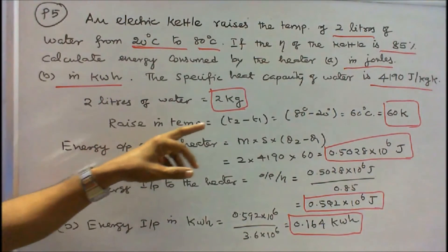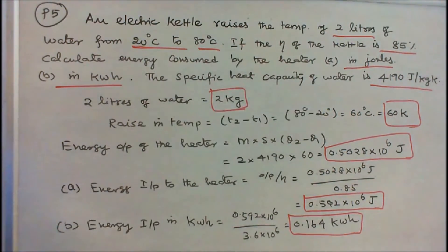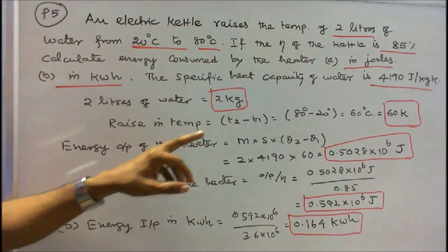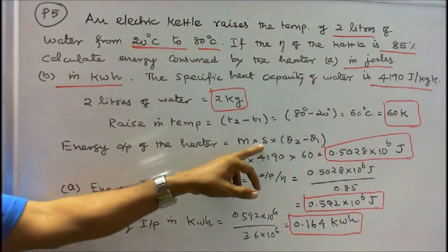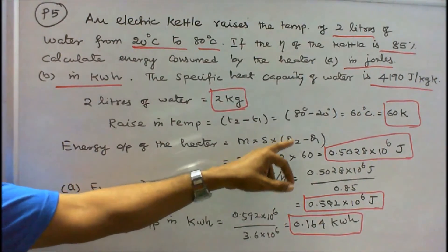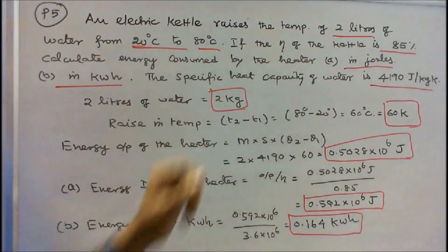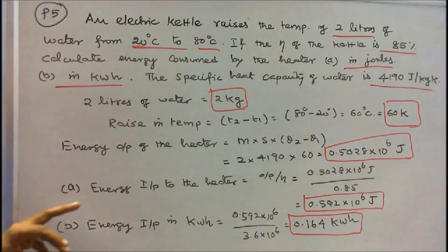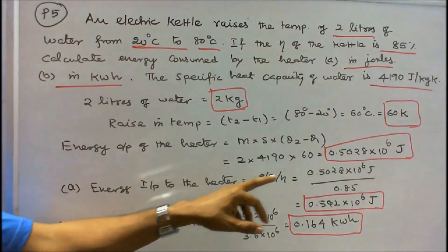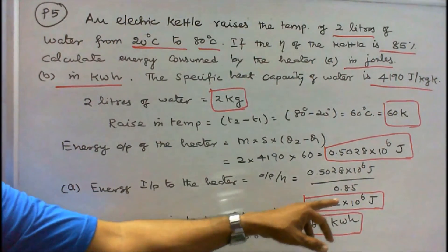Rise in temperature = T2 − T1 = 80 − 20 = 60 degrees centigrade or 60 kelvin. Output energy = M × S × ΔT = 2 × 4190 × 60 = 0.5028 × 10⁶ joules. Efficiency is 85% = 0.85, so input energy = output divided by efficiency = 0.5028 × 10⁶ divided by 0.85 = 0.592 × 10⁶ joules.